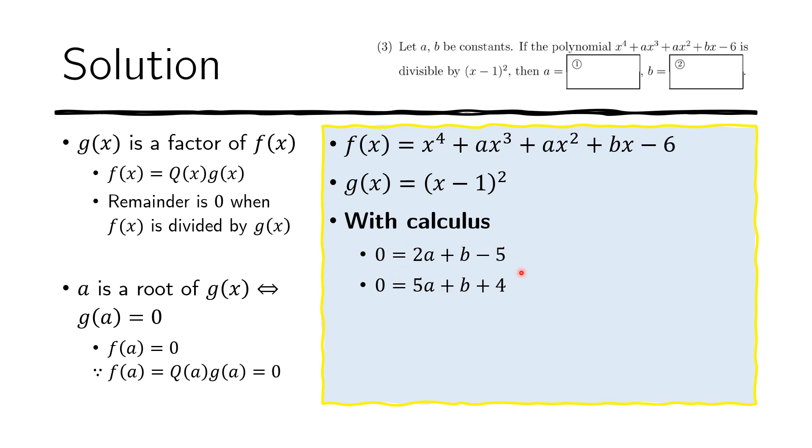So here we have our two equations. We just need to solve them. And what I do is I just subtract the second equation from the first. So we get 2A minus 5A, so it's negative 3A. B minus B is zero. Negative five minus four is negative nine. So we get A equals negative three. And then we just plug in this negative three in the first equation.